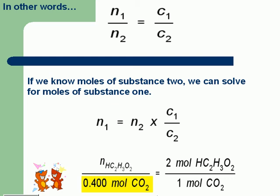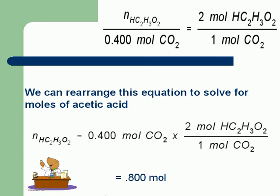n_HC2H3O2 over 0.400 mol CO2 equals 2 mol HC2H3O2 over 1 mol CO2. We can rearrange this equation to solve for the moles of acetic acid, which equals 0.400 mol CO2 times 2 mol HC2H3O2 over 1 mol CO2, which is 0.800 moles.